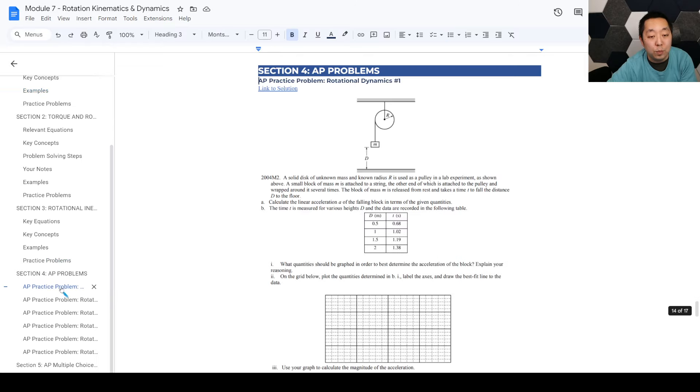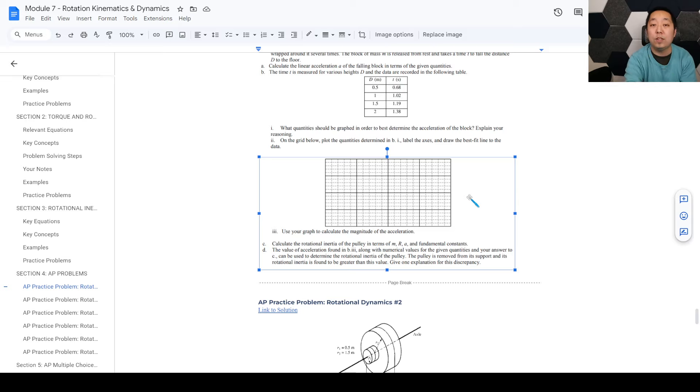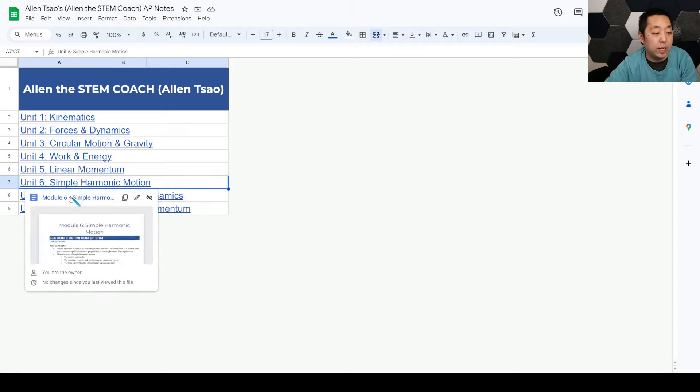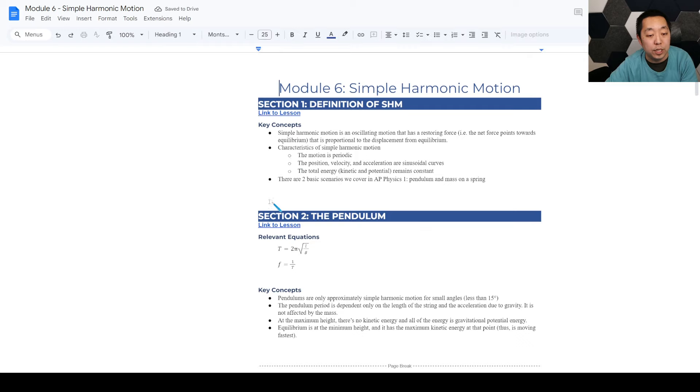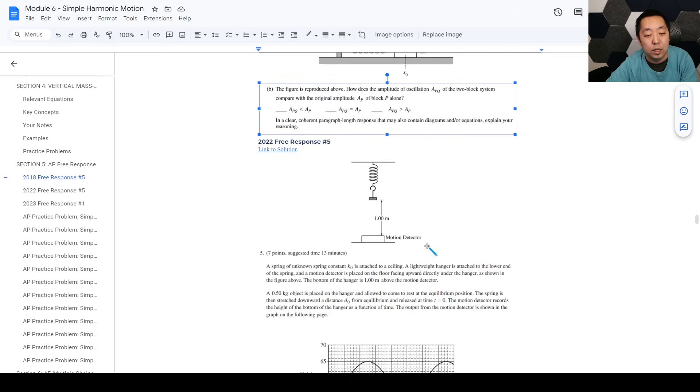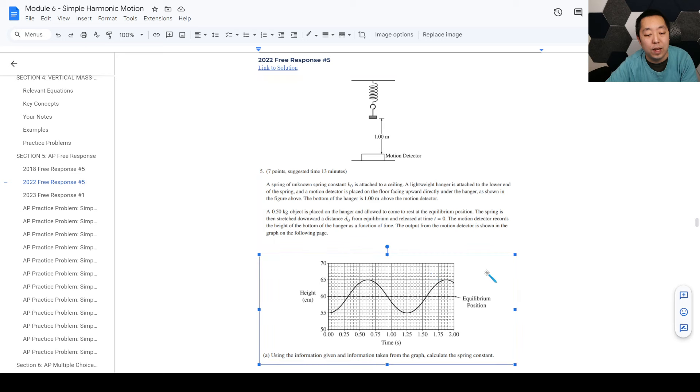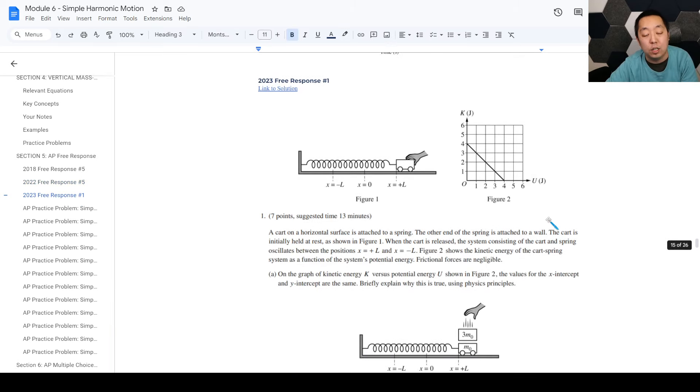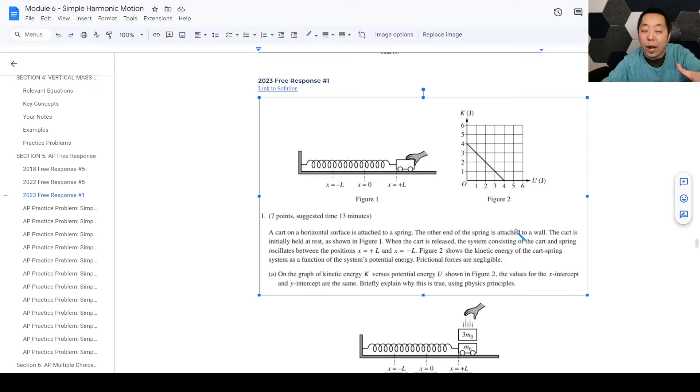Some examples down here. This is probably the most useful part - some of the AP problems. Some of these come from workbooks that College Board had or sometimes they are past FRQ questions. For example, let's say I go to the simple harmonic motion notes. You'll see them organized by year - here's the 2018 free response number five that dealt with harmonic motion or the 2022 number five. You can find these FRQs on the College Board website, but I've organized them for my students and I want to share that with you guys.